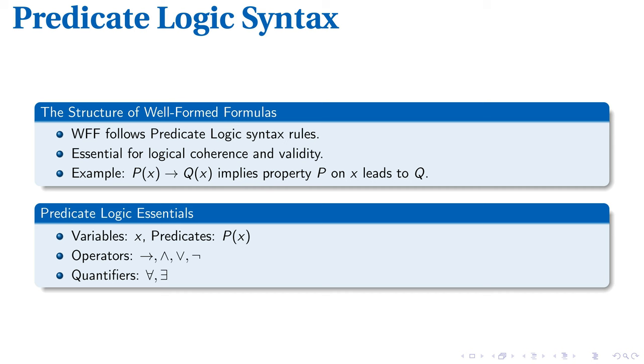Quantifiers like for all and exists add another layer of complexity. These are frequently used to infer the universality or existence of conditions, and they help us establish a comprehensive scope for our logical statements. Understanding these elements is a necessary step towards mastering predicate logic.